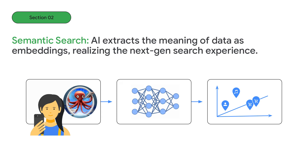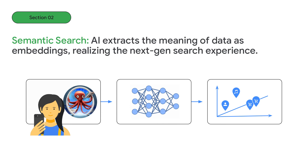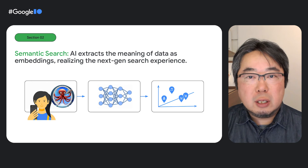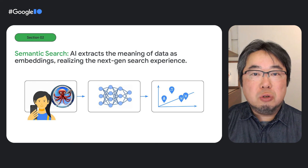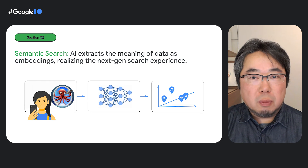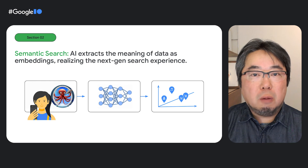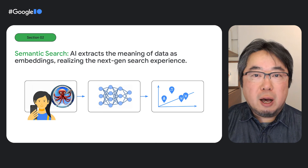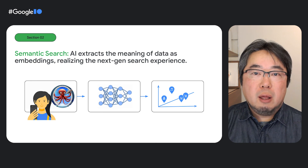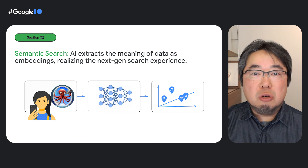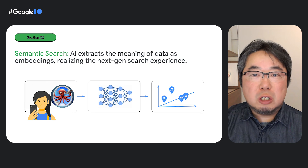AI is now playing a crucial role in human-computer interaction in those applications. It organizes data into embeddings, which represent the user's intention, the meaning of a product, or many other things you have in your business. This creates a new level of search experience that is becoming the new standard.